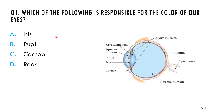Now let us solve some important multiple choice questions based on the human eye. Question one: which of the following is responsible for the color of our eyes? Options: iris, pupil, cornea, rods. The correct answer is iris. The iris is responsible for the color of our eyes.